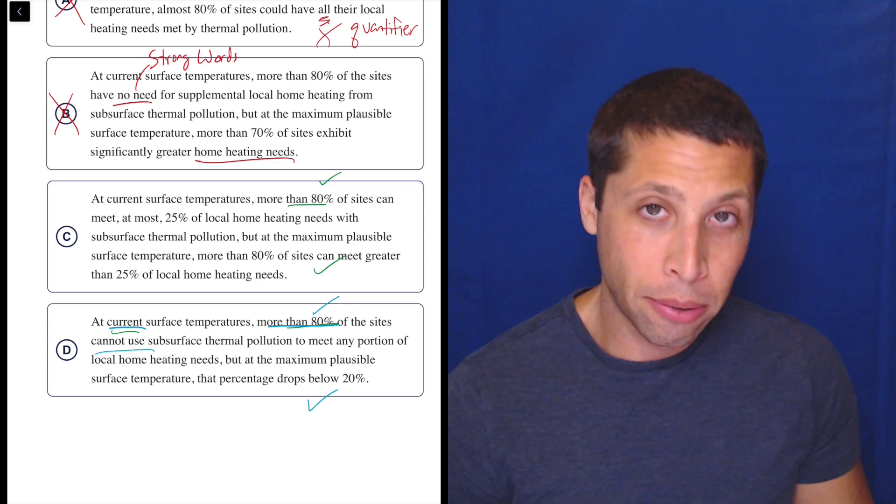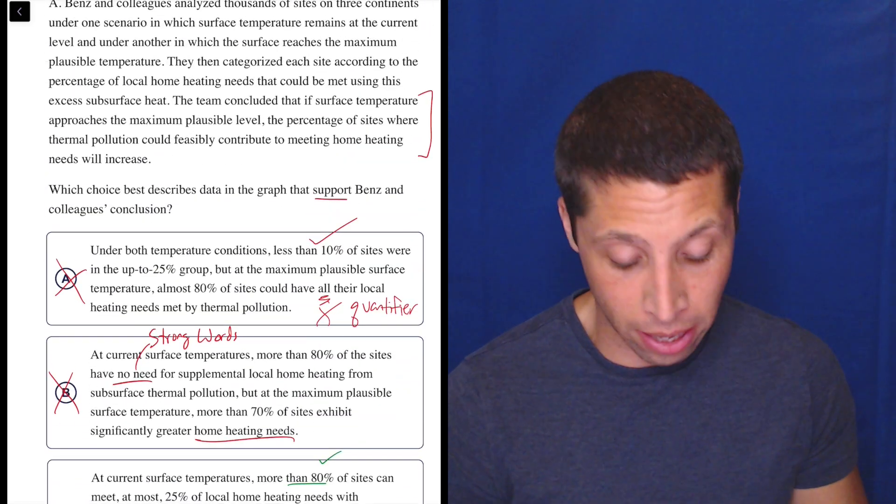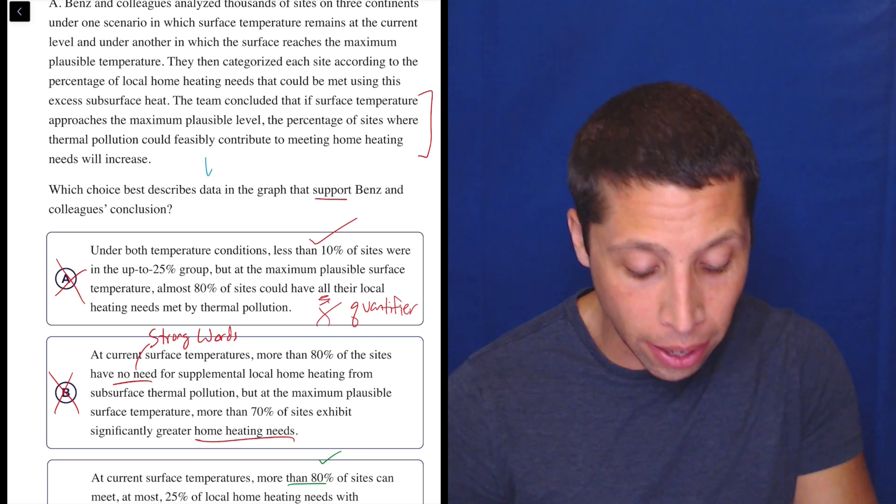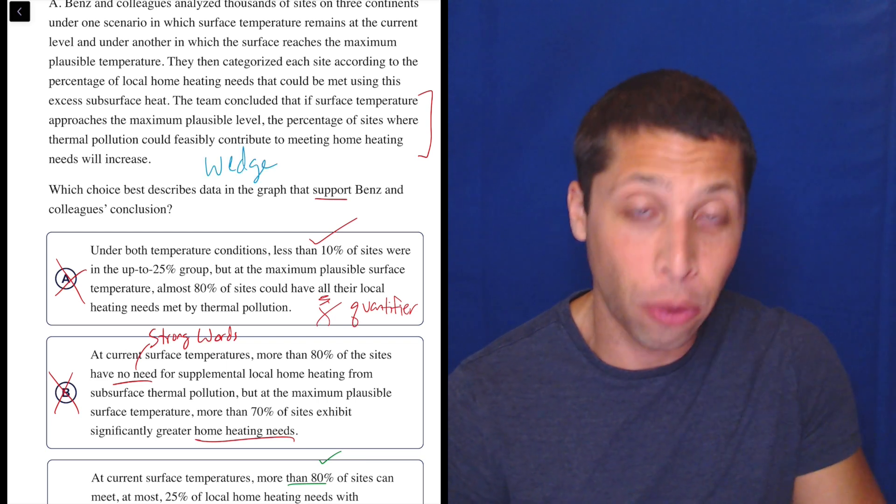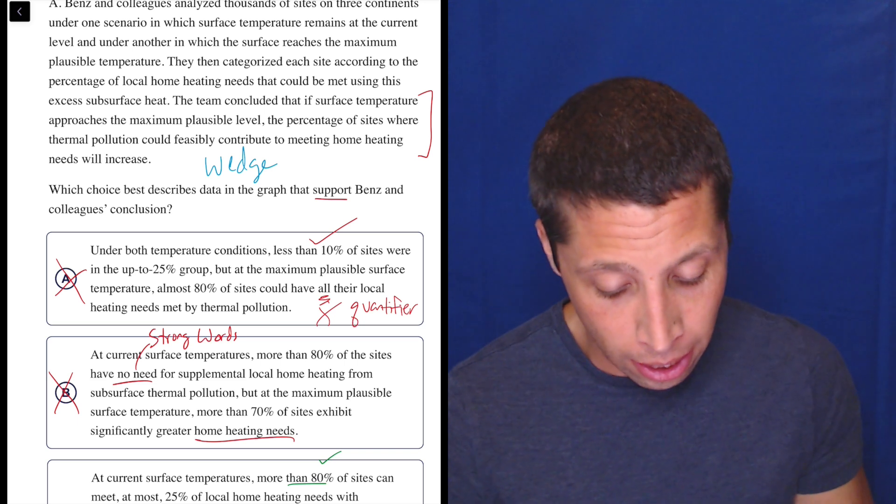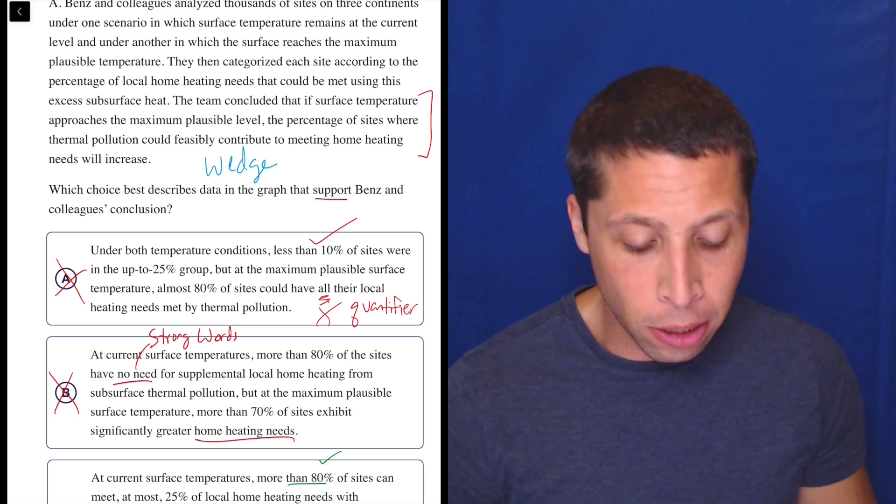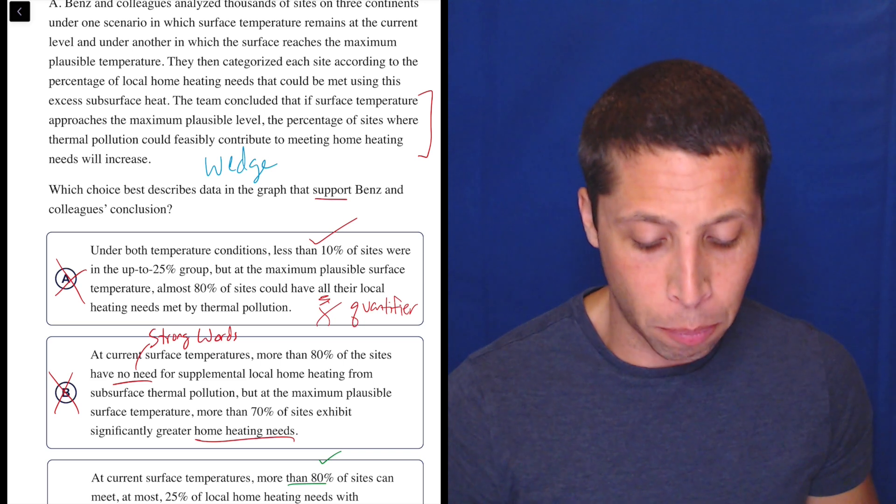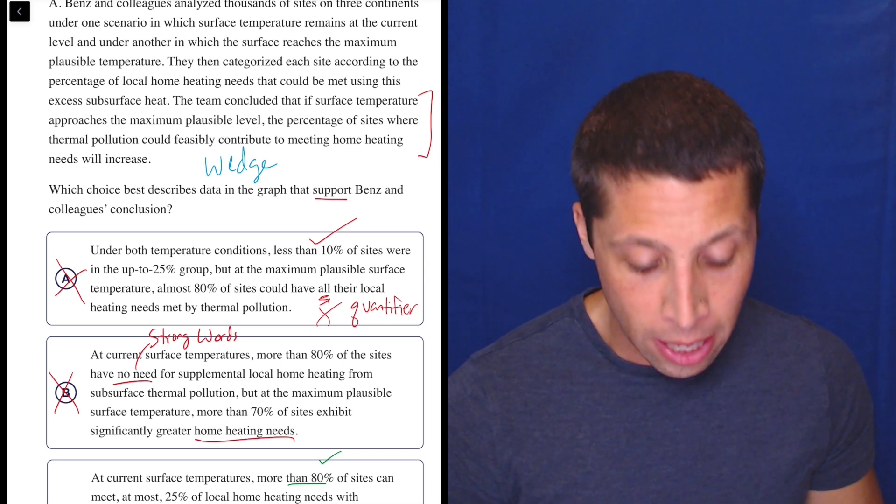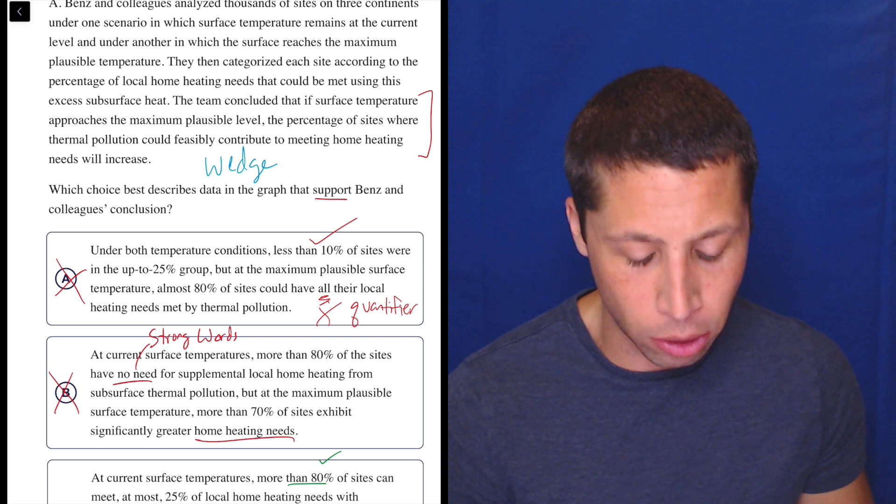So how is that possible? Two answers, right? Well, now we got to go back because now the passage is going to tell us this is that idea of a wedge, right? There is something that must separate these choices. They are both factually true according to the chart. At least I think, I think so. Let's look at the conclusion again. The team concluded that if surface temperature approaches the maximum plausible level, the percentage of sites where thermal pollution could feasibly contribute to meeting home heating needs will increase.